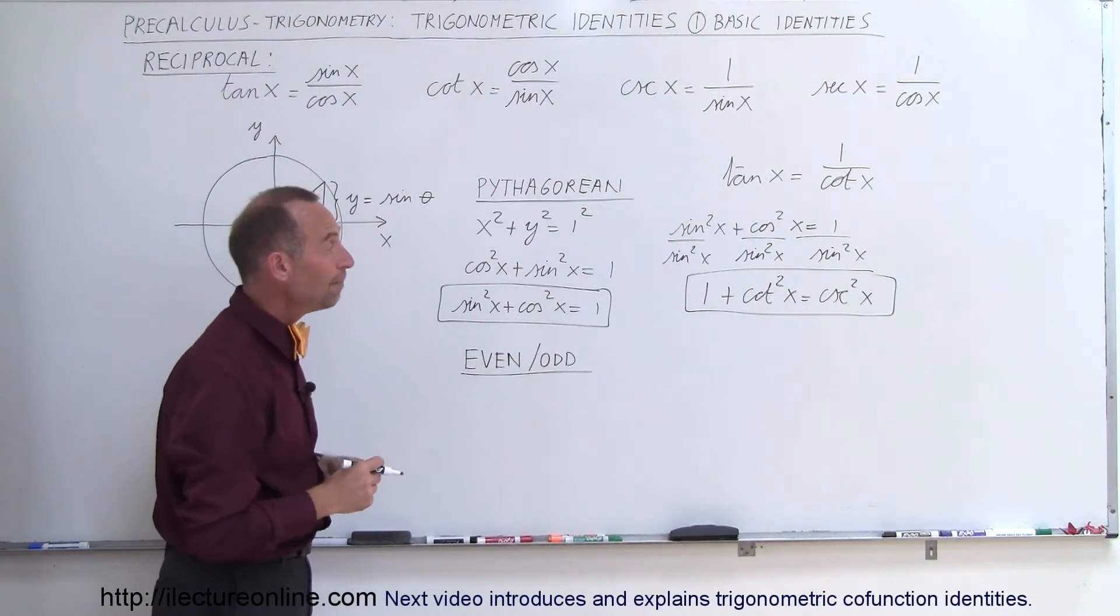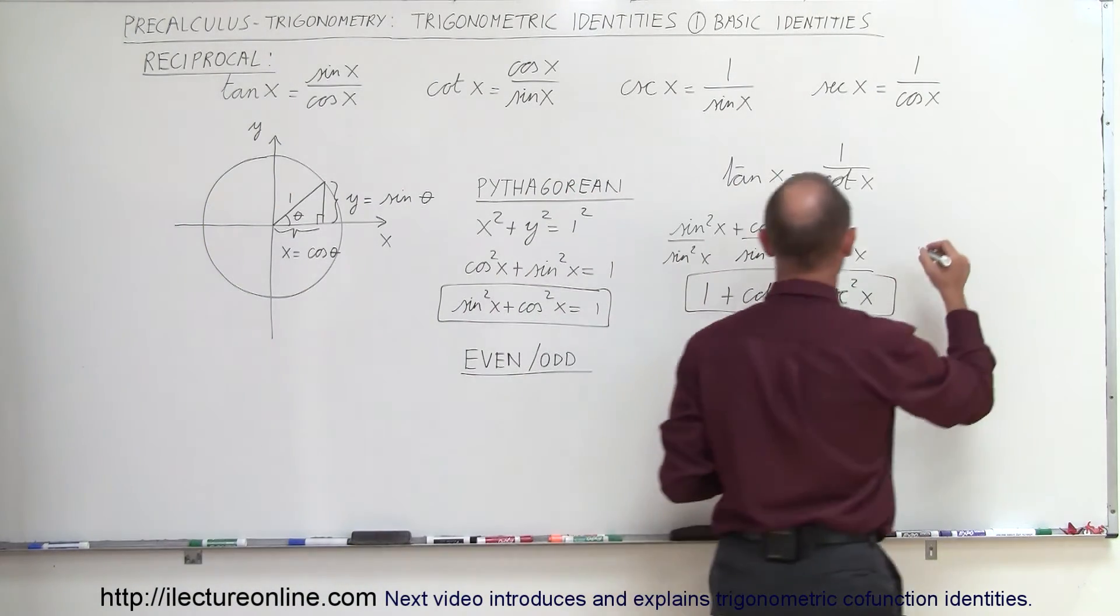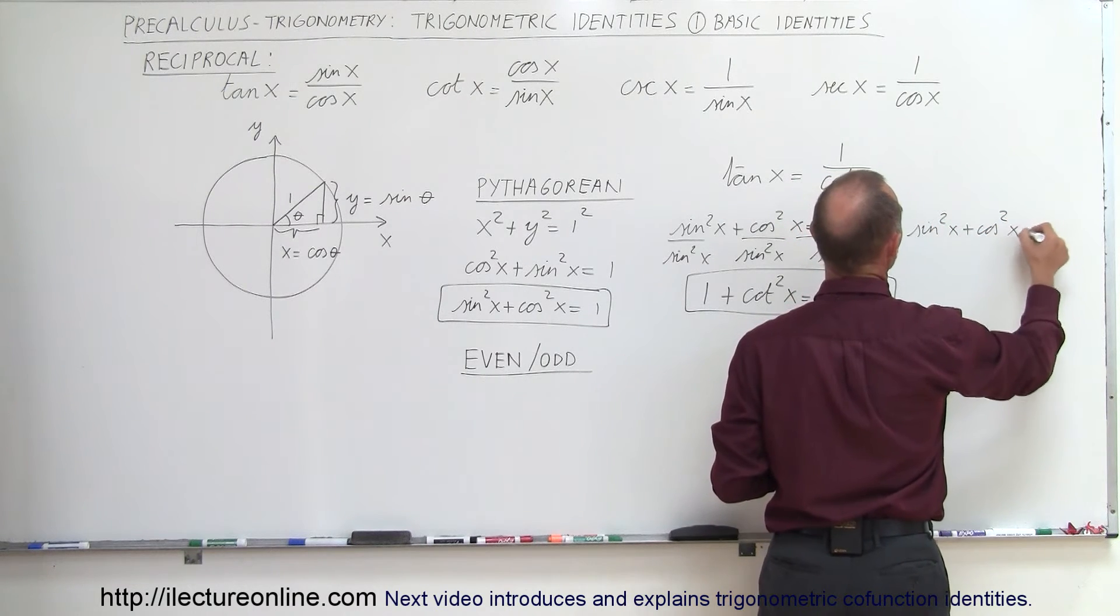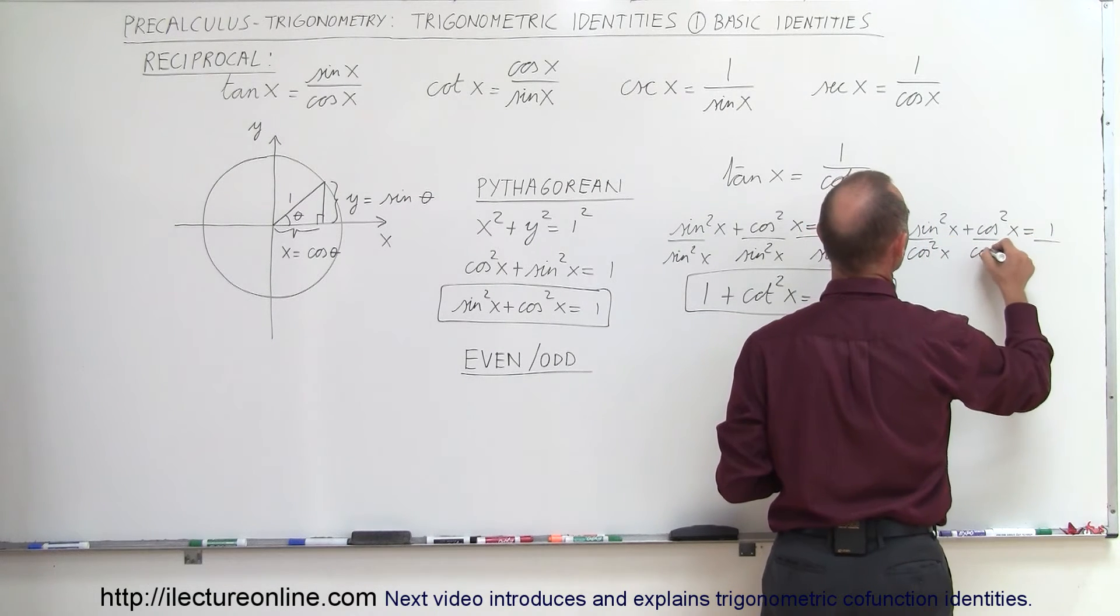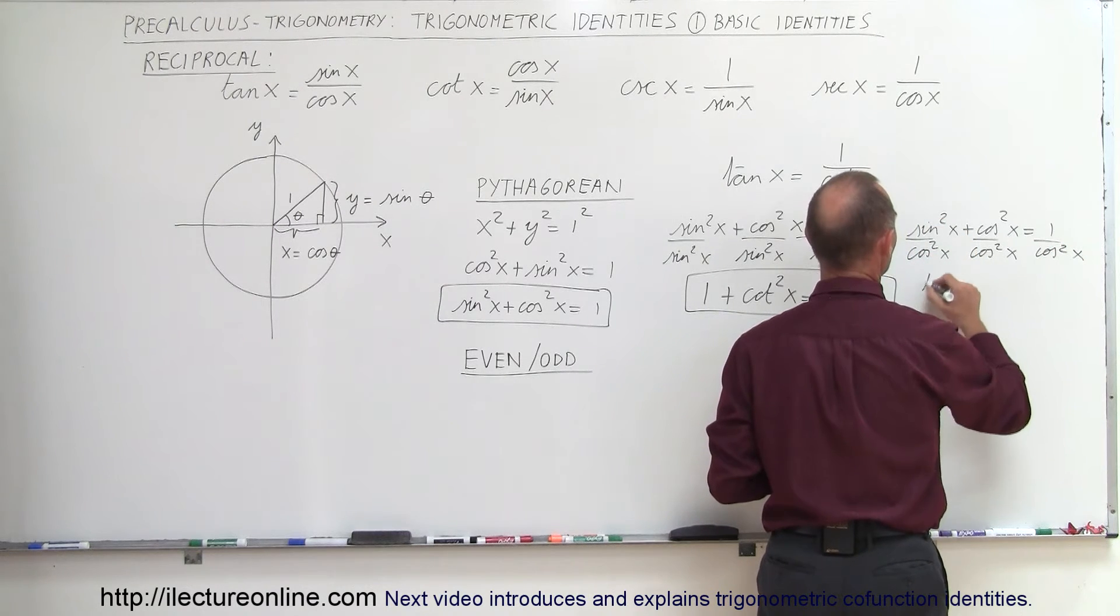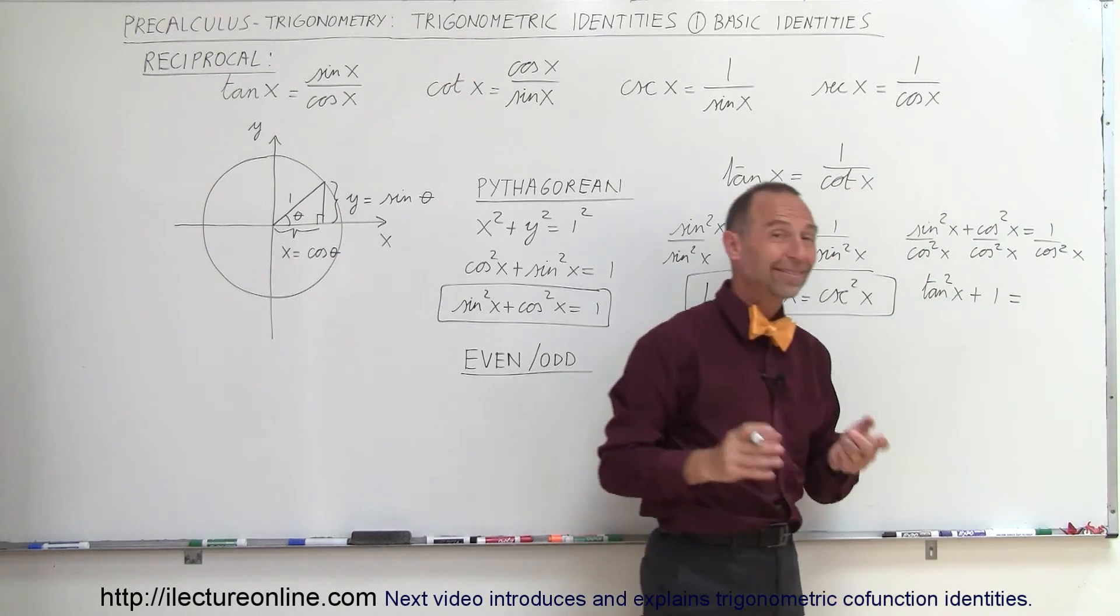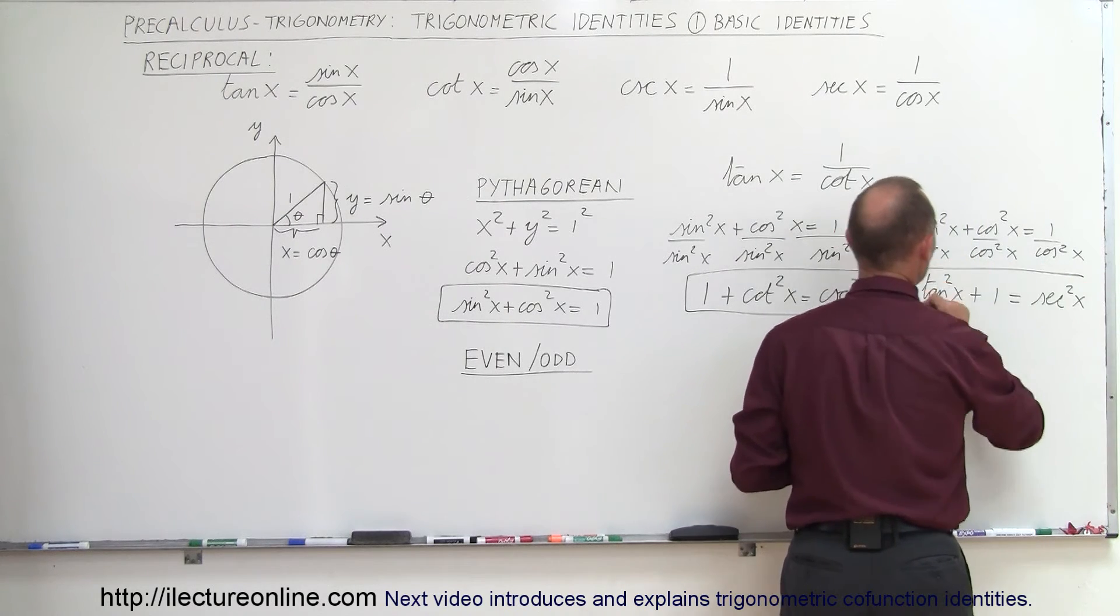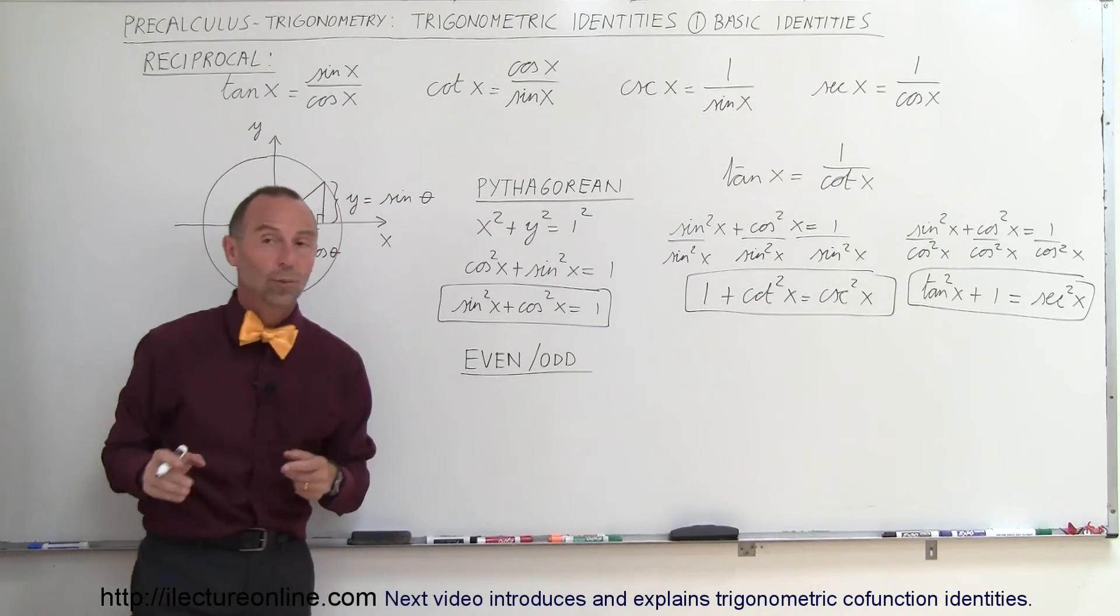If we do the same thing again but now we divide both sides by the cosine squared of x, we get something similar. We take the sine squared of x plus the cosine squared of x equals 1. Now we divide both side of the equation by the cosine squared of x. Here we get the sine divided by cosine is a tangent, so we get the tangent squared of x plus 1, and 1 over the cosine is the secant, so that becomes the secant squared of x. So those three equations all come down from this concept that x squared plus y squared equals 1. That's why we call that the Pythagorean identities.